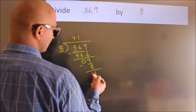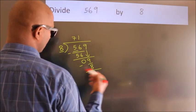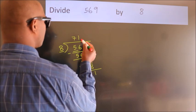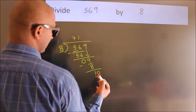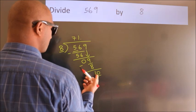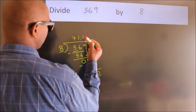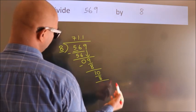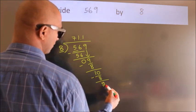After this, no more numbers to bring it down. So what we do is, we put dot, take 0. So 10. A number close to 10 in 8 table is 8 once 8. Now we subtract. We get 2.